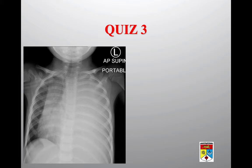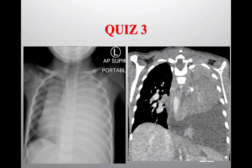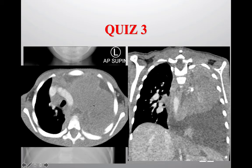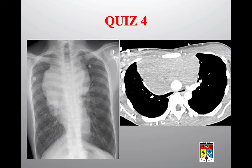Quiz 3: The abnormality appears homogeneously opaque — a unilateral opaque lung. The differential is empyema or a mediastinal mass. Ultrasound showed a solid lesion. CT scan — coronal and axial views — confirms a mass arising from the posterior mediastinum, compressing and displacing the mediastinal structures and the arch of the aorta to the right side. This is a thoracic neuroblastoma.